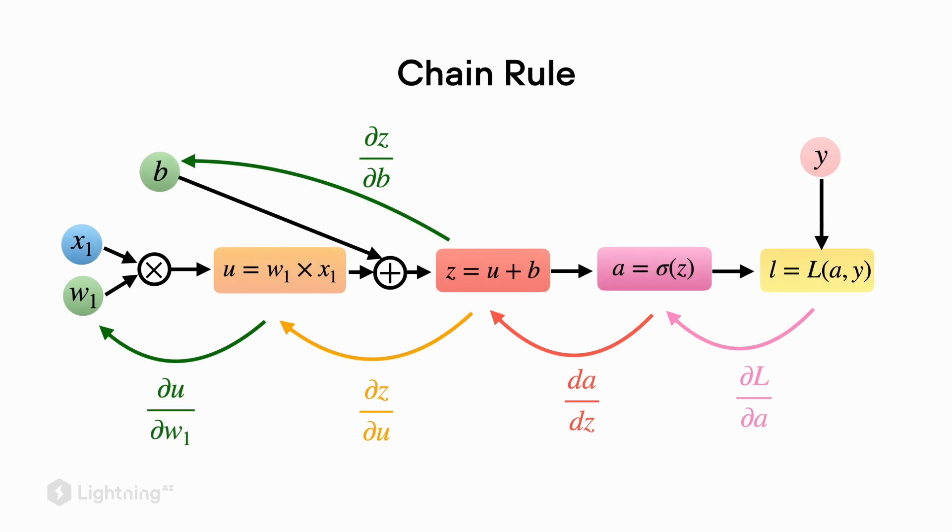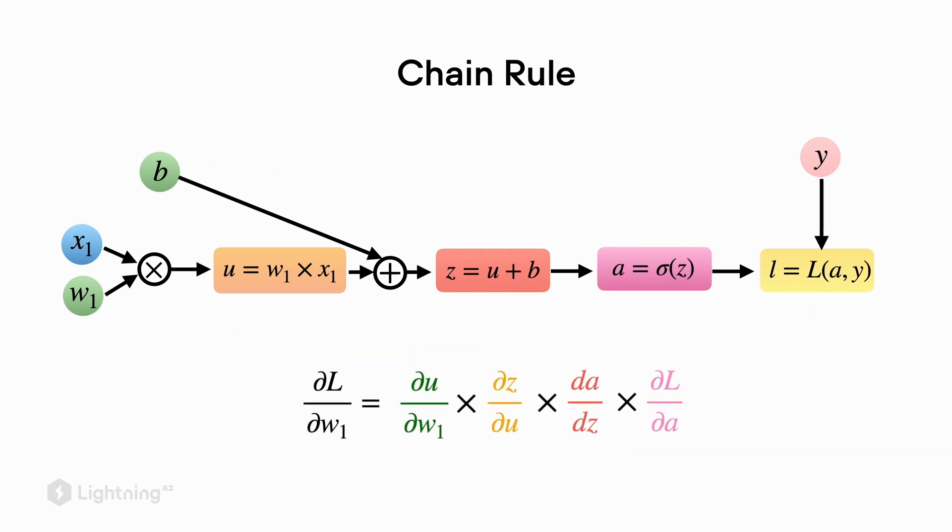So just a brief recap, in the previous video we had this computation graph where we computed the individual derivatives and partial derivatives. And then we used the chain rule to combine these individual terms to compute the partial derivative of the loss with respect to w1, the model weight.